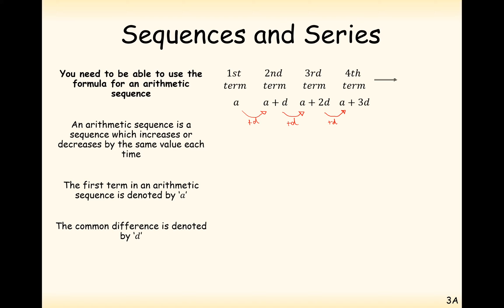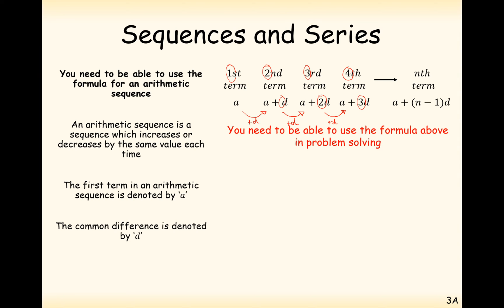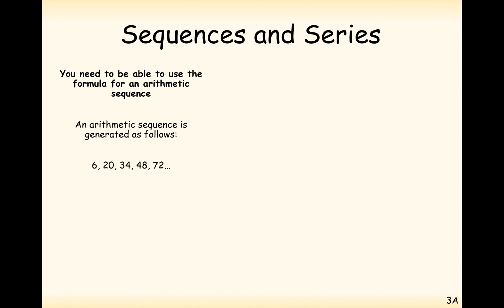Now if we carry this on up to the nth term, try and spot the pattern. The fourth term gives us three values of d, the third term is two values of d, the second term is one value of d, and the first term has no d. So the nth term is a plus (n minus 1) lots of d. That's how we work out an nth term rule for any given sequence using that formula, and you need to know and apply it in problem-solving questions.